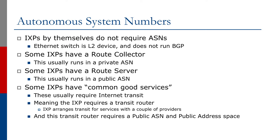Some Exchange Points have common good services, which usually require Internet Transit, meaning the Exchange Point requires a Transit Router. The Exchange Point will arrange transit for services with a couple of the member providers. This Transit Router requires a public AS number and public address space, again obtainable from the regional registries.